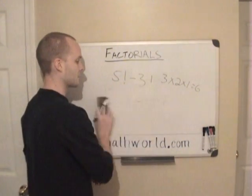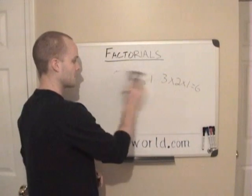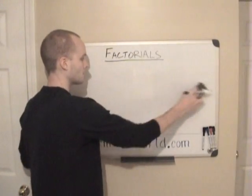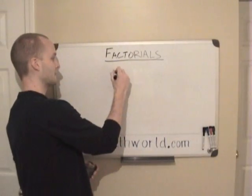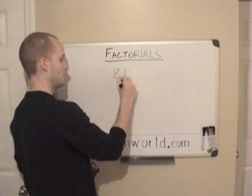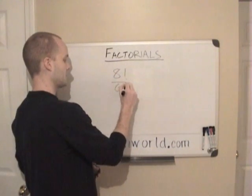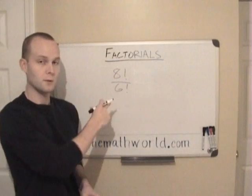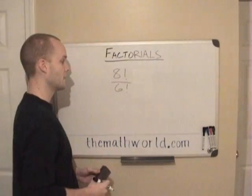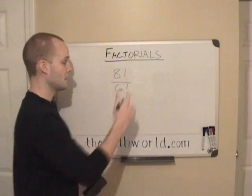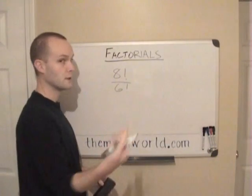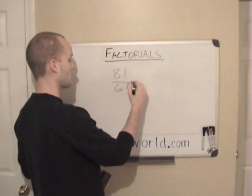Now a lot of times when dealing with factorials, you'll see division. And you might see a problem like this, 8 factorial divided by 6 factorial. And what you can do is, you can cancel out just like you would any multiplication or division problem.